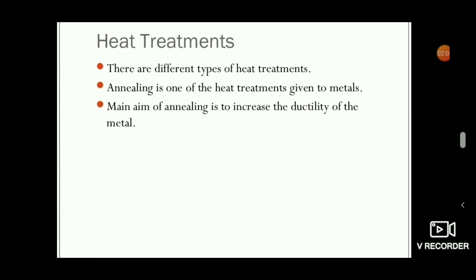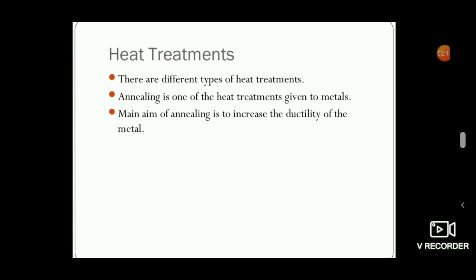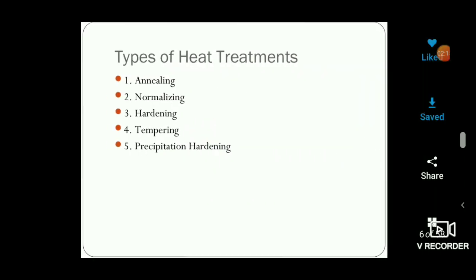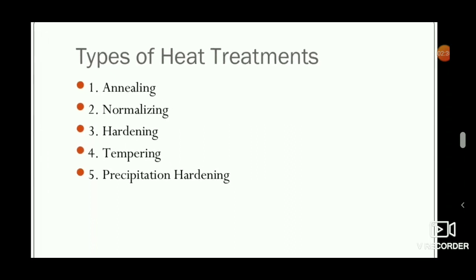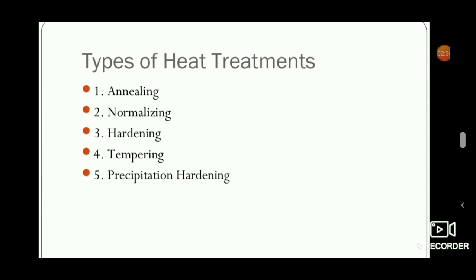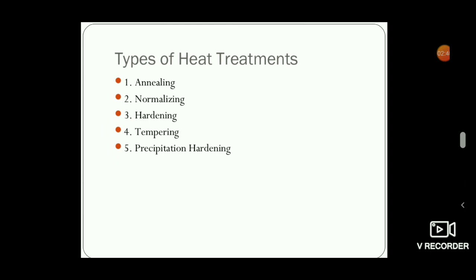There are different types of heat treatment. For example, annealing is used to increase the ductility of the metal. The main types of heat treatment are: annealing, normalizing, hardening, tempering, and precipitation hardening. In this video we discuss only the types of heat treatment; further videos will explain the detailed particulars of each process.